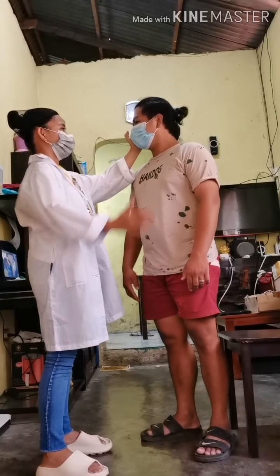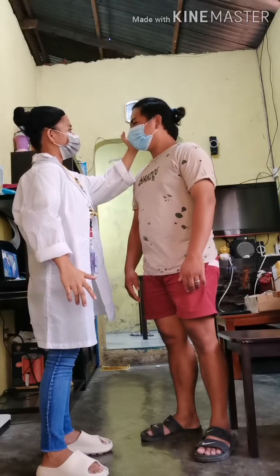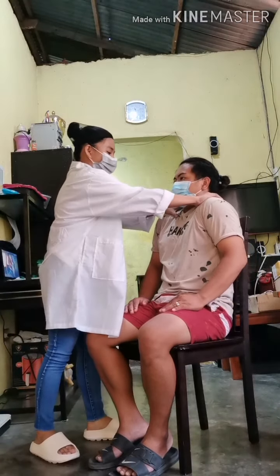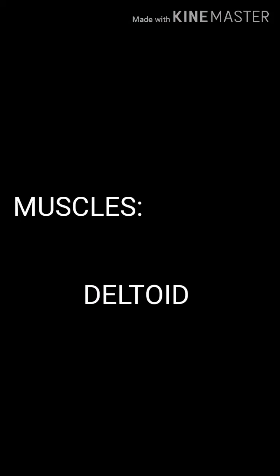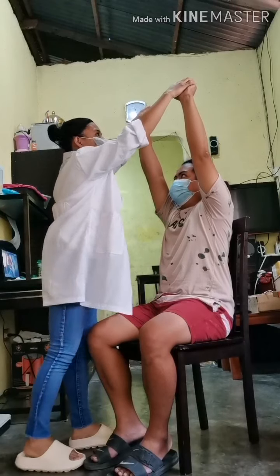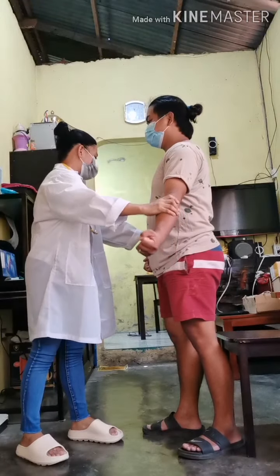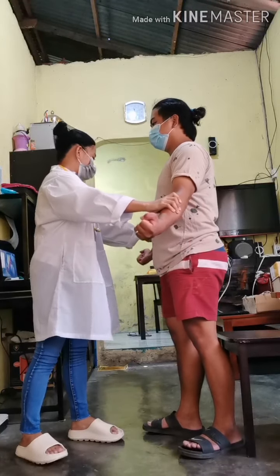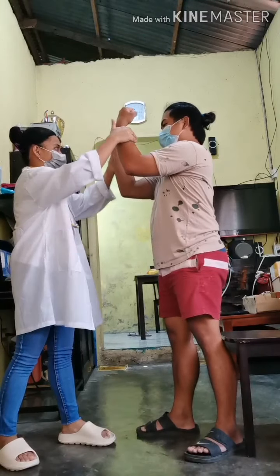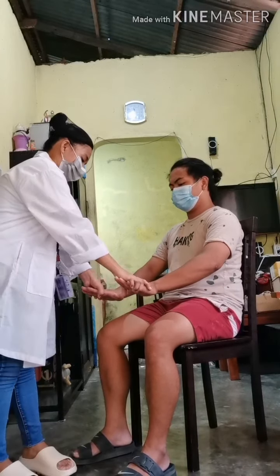Client turns the head to one side against the resistance of your hand; repeat with the other side. Client shrugs the shoulders against the resistance of your hands. Client holds the arm up and resists while you try to push it down. Client fully extends each arm and tries to flex it while you attempt to hold the arm in extension. Client flexes each arm and then tries to extend it against your attempt to keep the arm in flexion. Client spreads the fingers and resists as you attempt to push the fingers together.